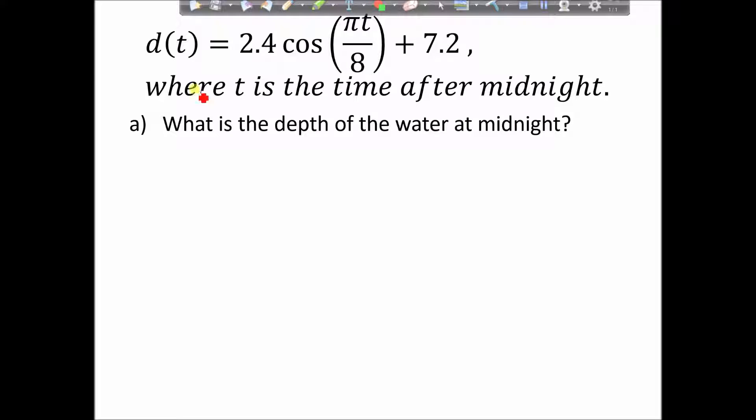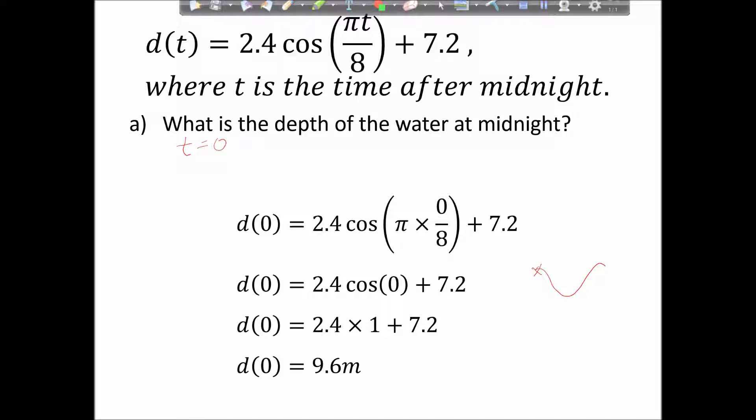So the first one, using this equation, find the depth of the water at midnight. Well, t is the time after midnight, so at midnight that means time is equal to zero. If I put zero in for t, d(0) = 2.4cos(π × 0/8) + 7.2, but really zero times anything is just zero, so that's just cos(0). We know cos(0) starts up high at one. So cos(0) is one, giving us that it starts at a depth of 9.6 meters. So that's basically as deep as it goes.